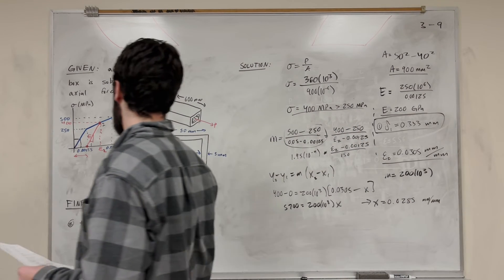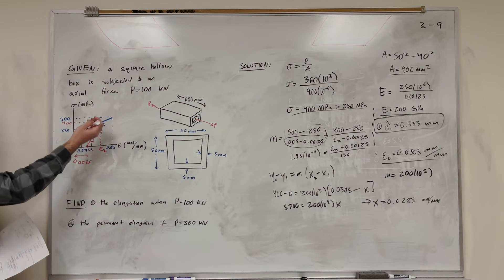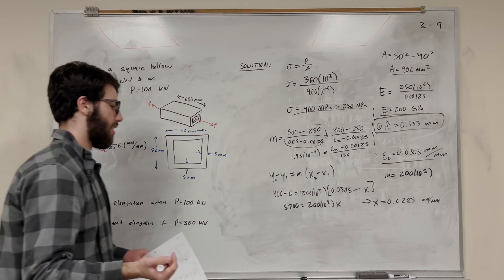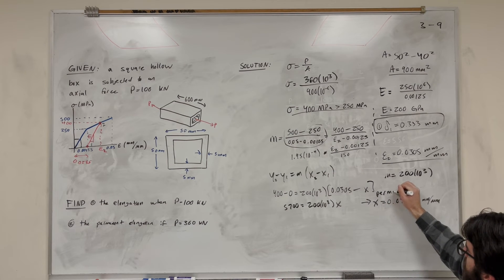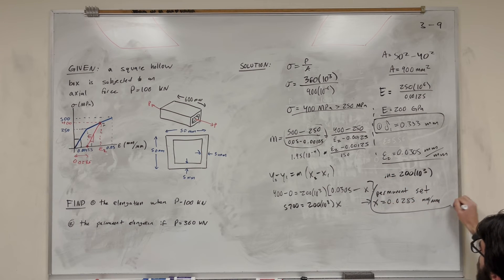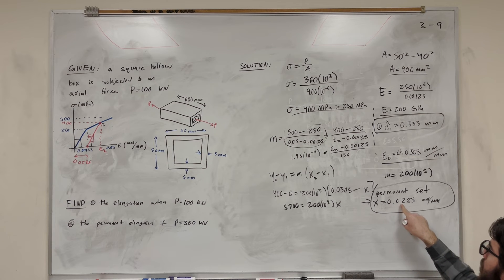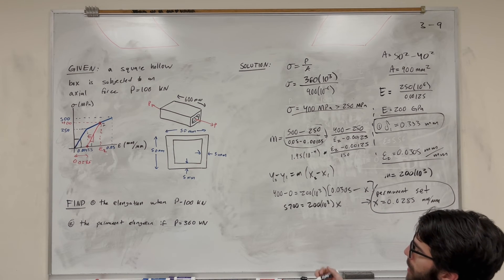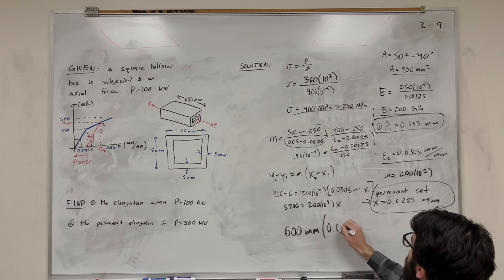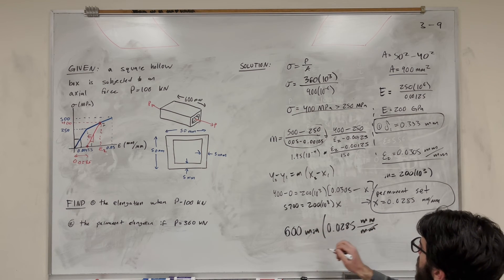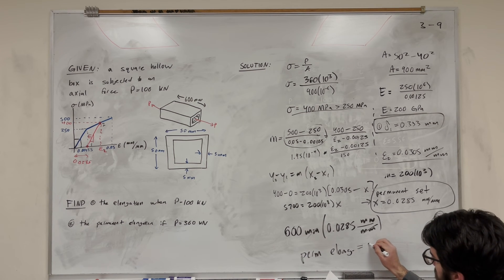So that distance — 0.0285 — is this point here on the graph. That's what's going to happen: when we let go, our length comes down to this new normal. That's our permanent set. But permanent elongation requires multiplying by the length of our figure. So we take 600 millimeters multiplied by 0.0285 millimeters per millimeter, the millimeters cancel, and we're left with a permanent elongation equal to 17.1 millimeters.